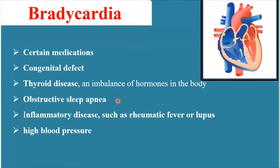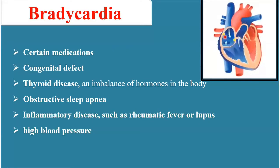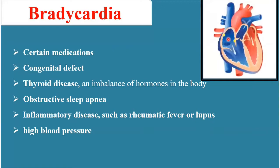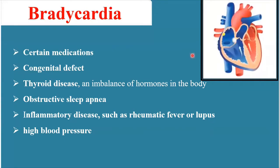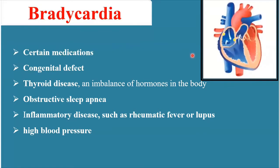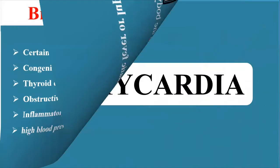In summary, bradycardia refers to a heart rate less than 60 beats per minute. It can result from slow discharge, pauses, or blockages in impulses from the SA node. It can occur normally during sleep or rest for a limited time, but persistent bradycardia due to pathological conditions needs to be properly treated. The other arrhythmia to discuss is tachycardia.